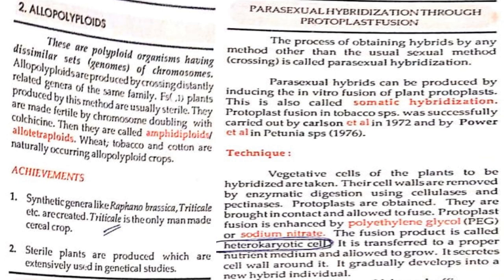Allopolyploids: these are polyploid organisms having a dissimilar set of chromosomes. Allopolyploids are produced by crossing distinctly related genera of the same family. The F1 plants produced by this method are usually sterile. They are made fertile by chromosome doubling with colchicine; they are then called amphidiploids or allotetraploids. Wheat, tobacco, and cotton are naturally occurring allopolyploid crops. Achievements: synthetic genera like Raphanobrassica and Triticale were created.